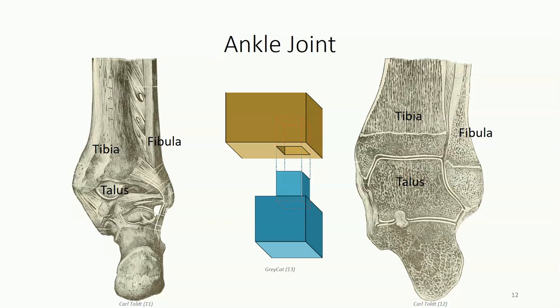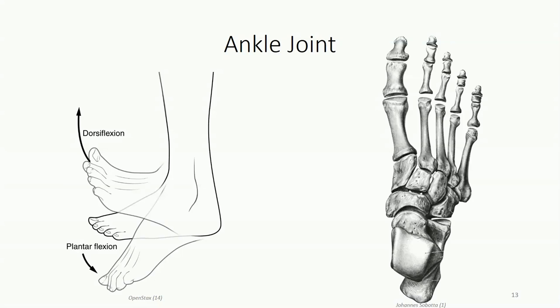The ankle is a hinge joint permitting dorsi and plantar flexion. As the joint moves, the superior surface of the talus glides in the sagittal plane — the anterior surface makes contact with the tibia and fibula in dorsiflexion, while the posterior surface makes contact in plantar flexion. The talus is wider anteriorly than posteriorly, so in a dorsiflexed position this wider portion is wedged between the tibia and fibula, creating a tighter fit. In plantar flexion, the narrower region articulates, resulting in more joint play — you can demonstrate this on yourself by rotating the relaxed ankle in both positions.